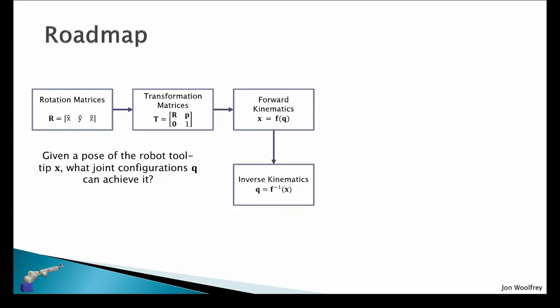From forward kinematics we move to inverse kinematics, which is the opposite problem. So given a pose of the robot tooltip X, what joint configuration Q can achieve it?